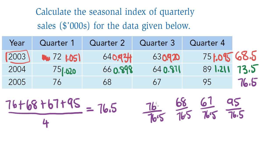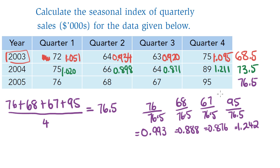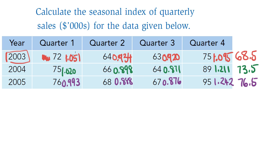76 is just less than 76.5 so that proportion will be slightly less than 1; 68 and 67 will also be less than 1; and 95 divided by 76.5 will be 1-point-something because 95 is greater than 76.5. Those are the yearly proportions for 2005. Now that I have yearly proportions for all three years I can work out an overall seasonal index for each quarter.